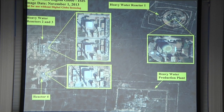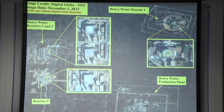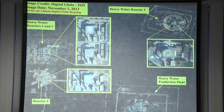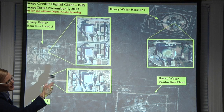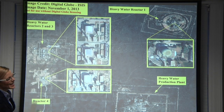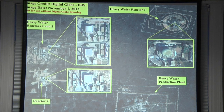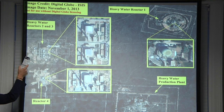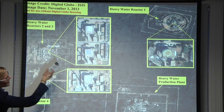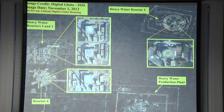Khushab in Pakistan is one of my favorite sites — it's pretty to look at. This shows the heavy water production plant and their first heavy water reactor. The signatures are quite distinctive: the classic dome, a cooling system on the far right, and a stack. Then you have reactors two, three, and four — all heavy water reactors, reactor four completed recently. They're all identical, which makes for a very clear, repeatable signature.